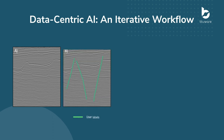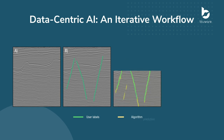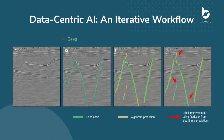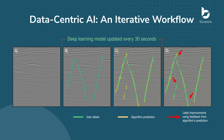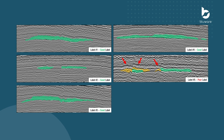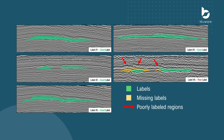Here we can see a blank seismic section which has various different faults present on it. After just a few epochs or iterations of training, we can see the prediction shown in yellow and our labels shown in green. We can see that in some instances we had missed a few labels and they're not as optimal as we'd like. However, we can use the feedback from the neural network to immediately improve upon our initial label set, therefore optimizing it, and directly feed that back into the deep learning as it is still training.